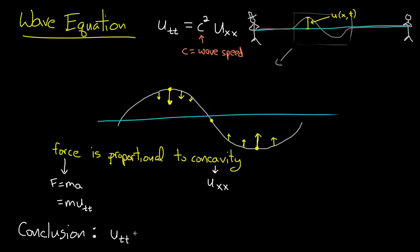And I'll write the proportionality constant as simply k. U_tt equals k times u_xx. What's the sign of k? Well, if I'm concave down, then my acceleration is downward. If I'm concave up, my acceleration is upward.